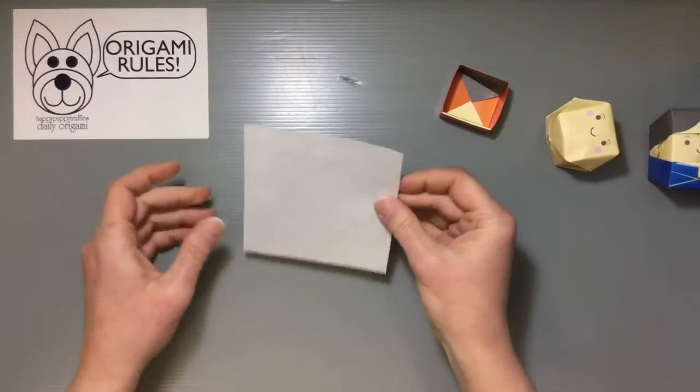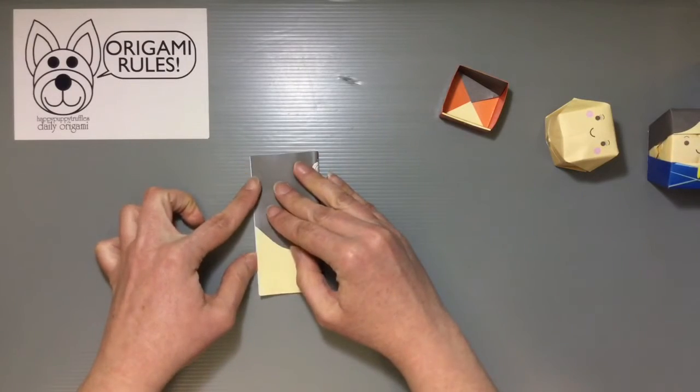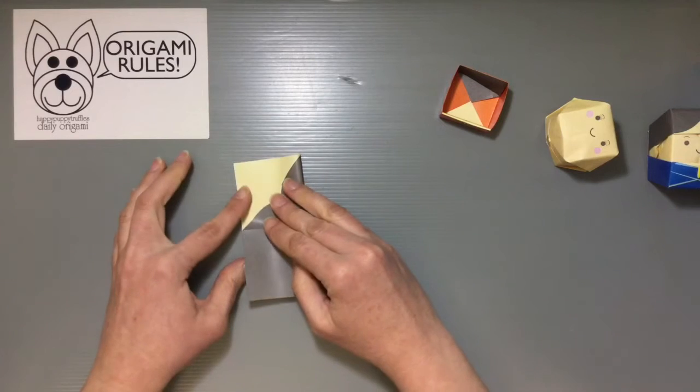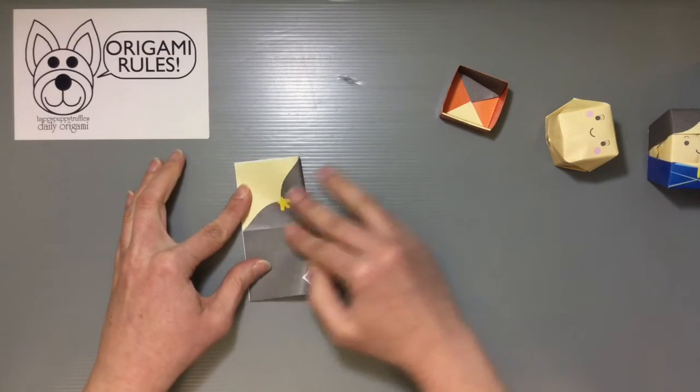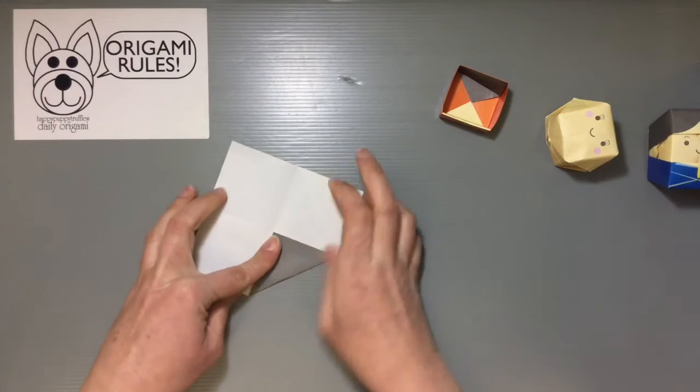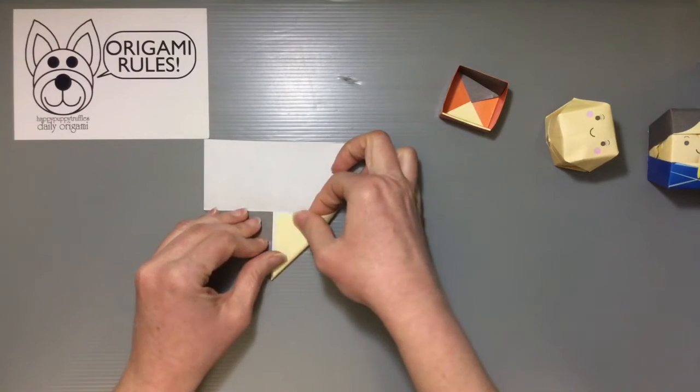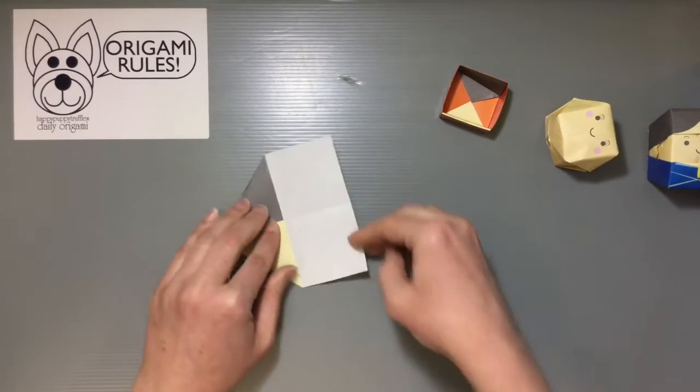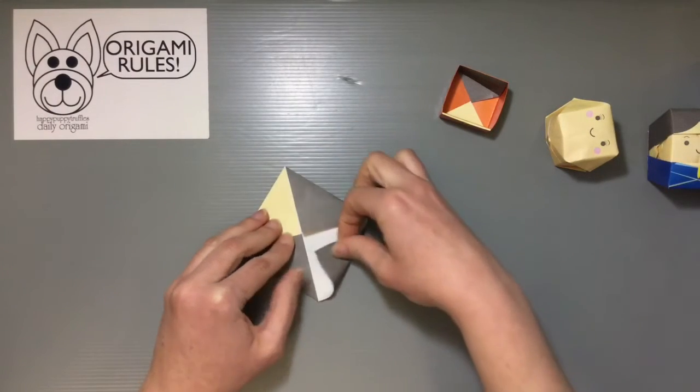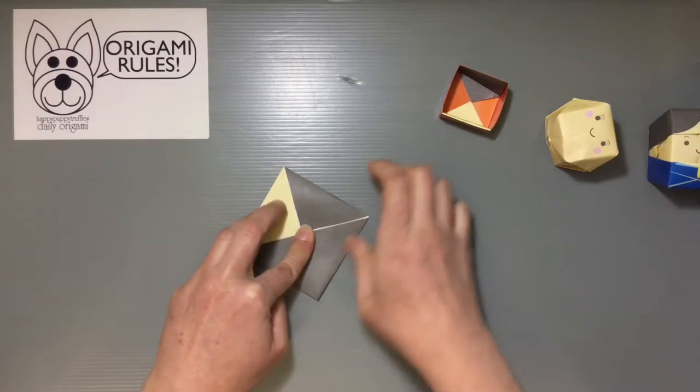And then I want to just go ahead and fold the other square really quick here too. And again, we just fold everything in half both ways. And then do a blintz base or a zabuton base by folding all four corners into the center. Get all four of those corners folded in.